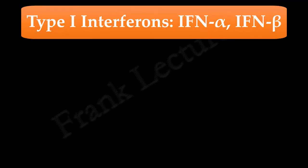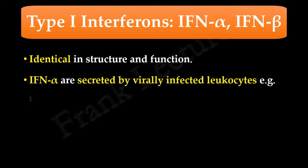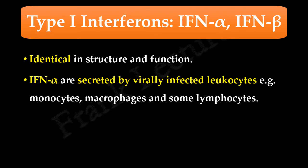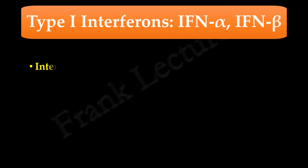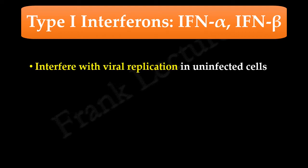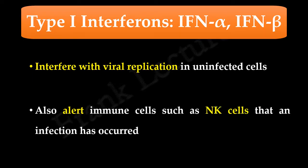Type 1 interferons comprise interferon alpha and interferon beta, which are identical in structure and function. Interferon alpha is secreted by virally infected leukocytes, for example monocytes, macrophages, and some lymphocytes. Interferon beta is secreted by fibroblasts. Type 1 interferons interfere with viral replication in uninfected cells. They also alert immune cells such as natural killer cells that an infection has occurred.